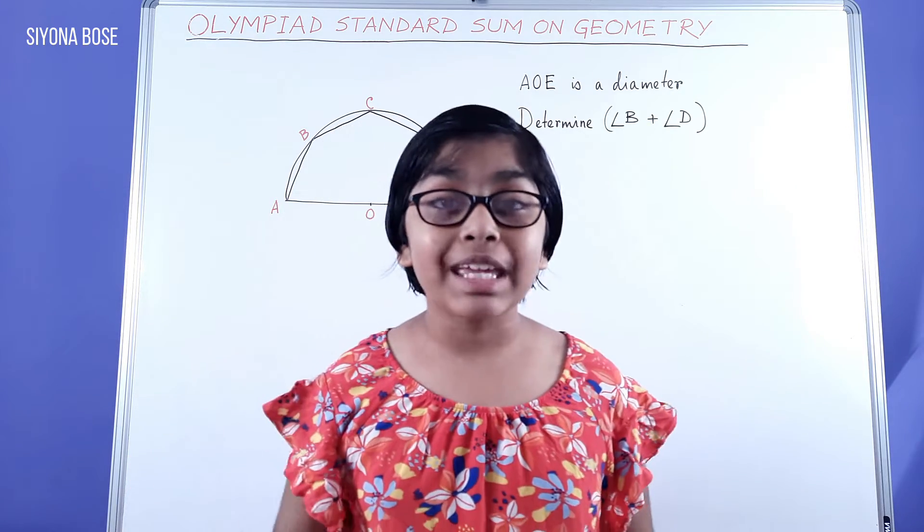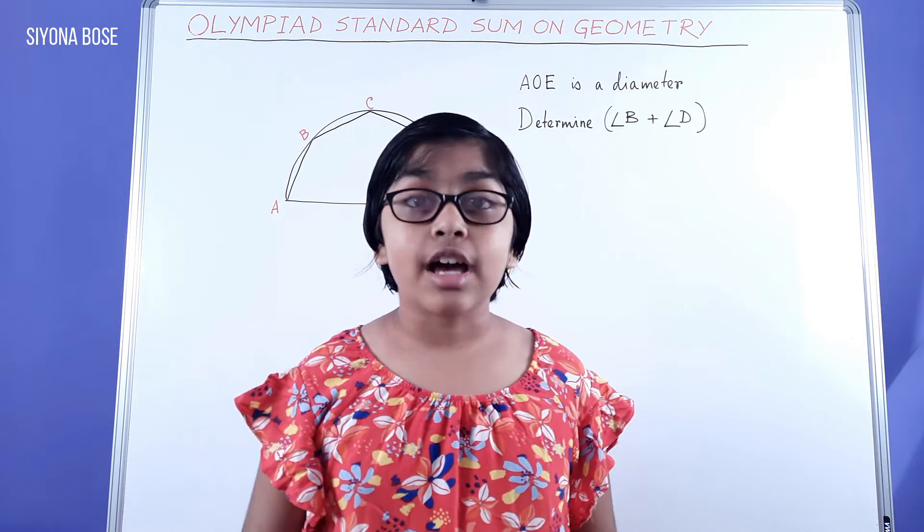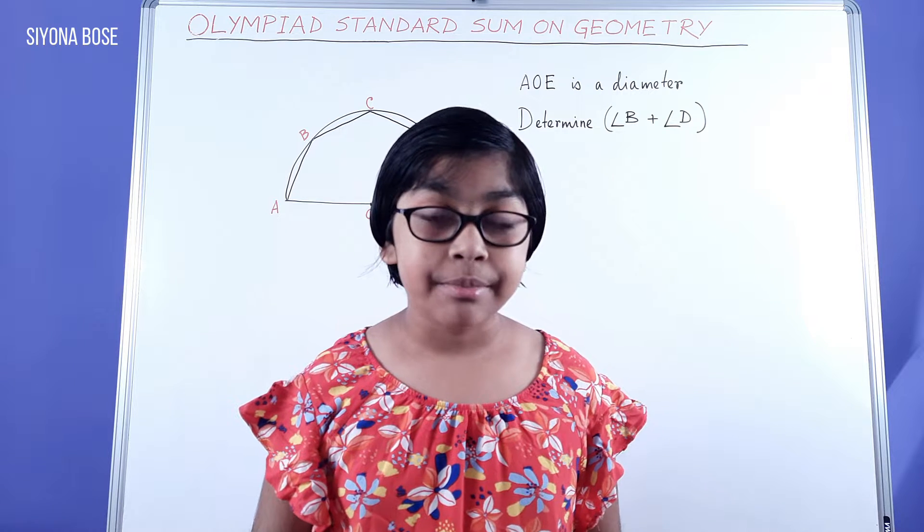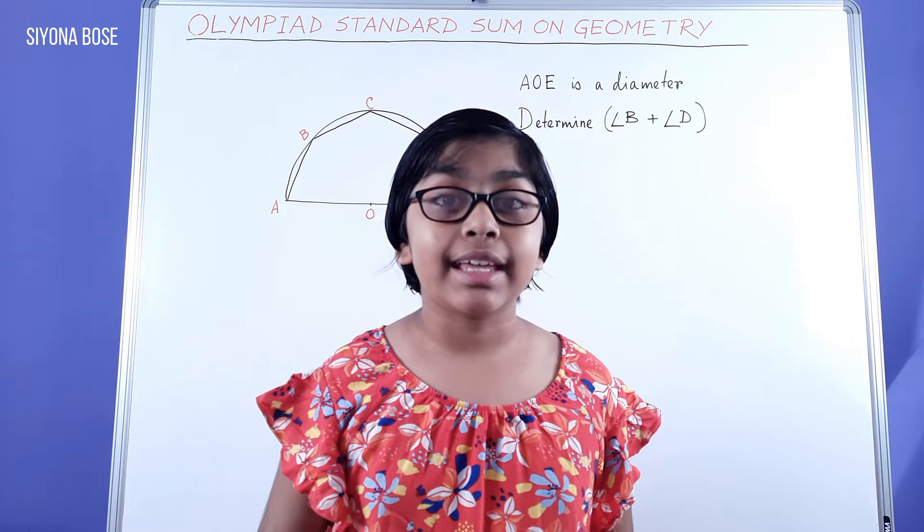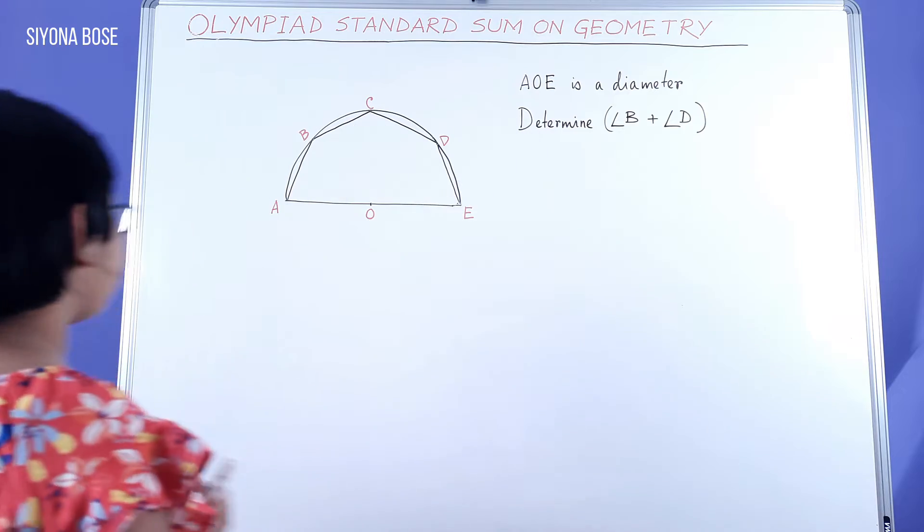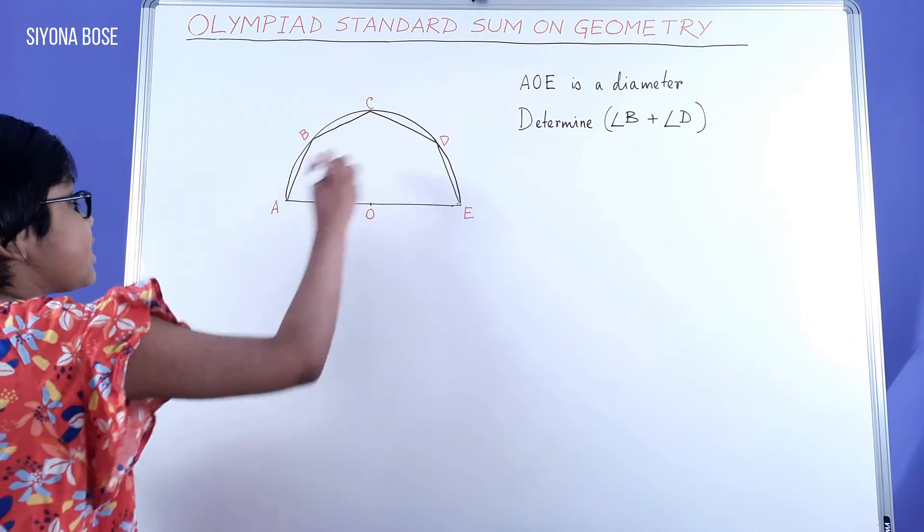Determine angle B plus angle D. So how will we do this? First, we have to make an extra construction. We have to join A and D.